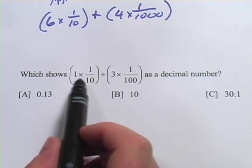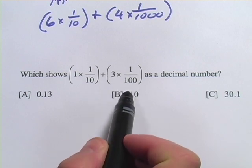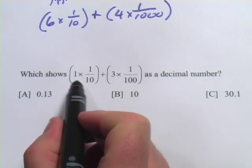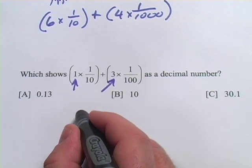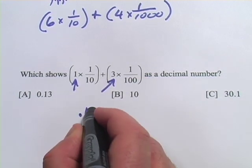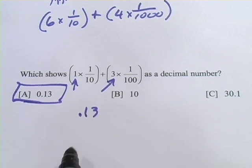We've got which shows 1 times one-tenth and 3 times one-hundredth as a decimal number. Well, that means there's going to be a 1 in the tenths place and a 3 in the hundredths place. So that would be 0.13, which would be A. So that is a little bit about expanded notation with decimals.